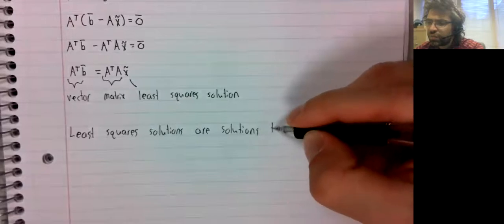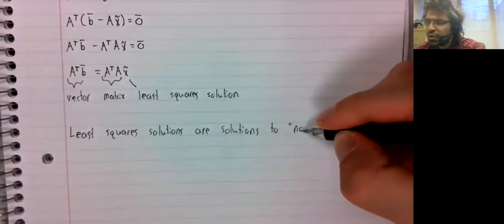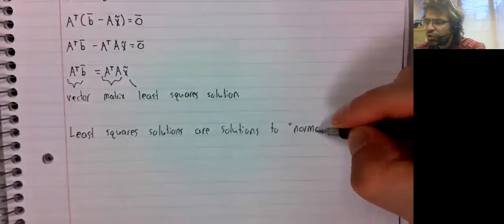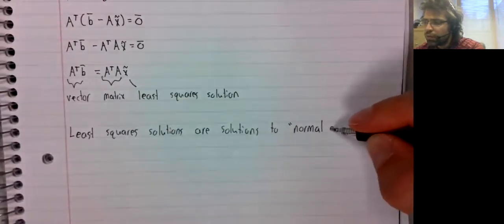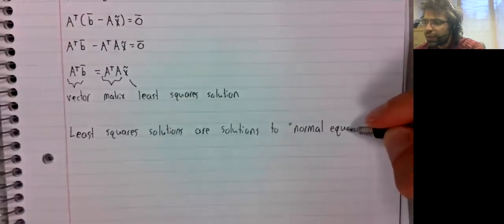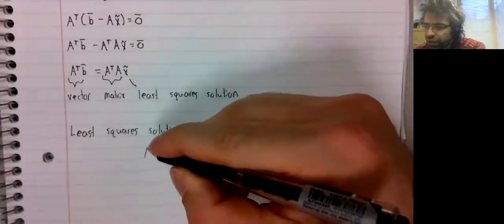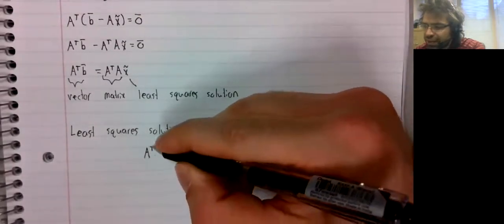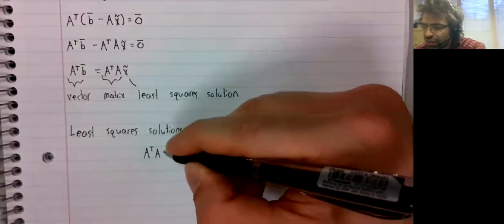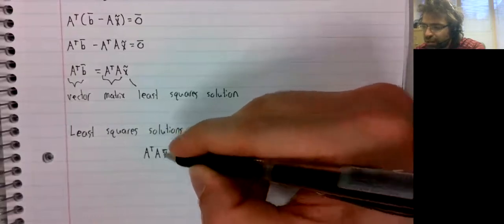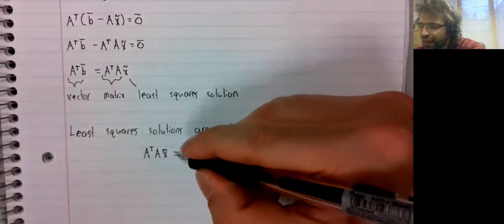Least squares solutions are precisely the solutions to the normal equation. Again, normal here as in perpendicular, not the opposite of abnormal.